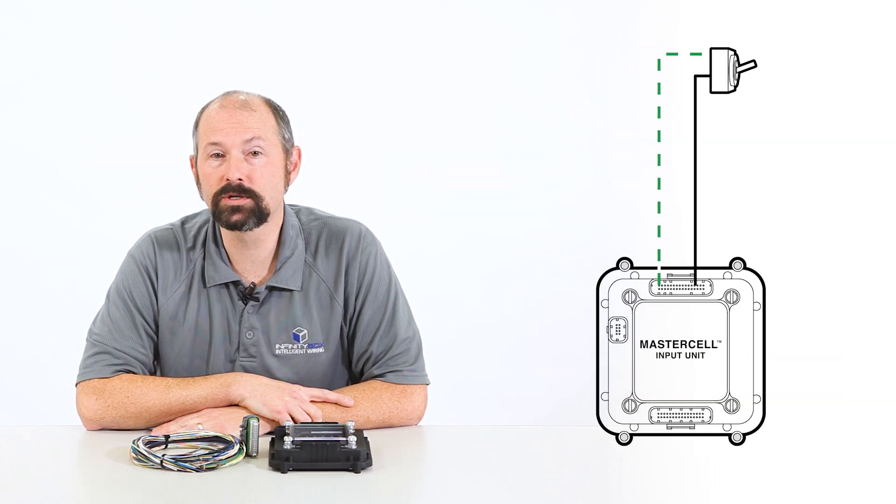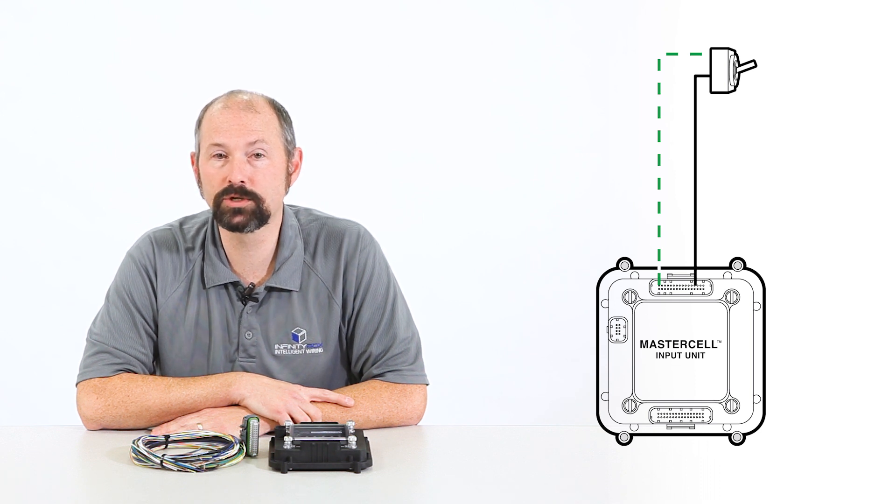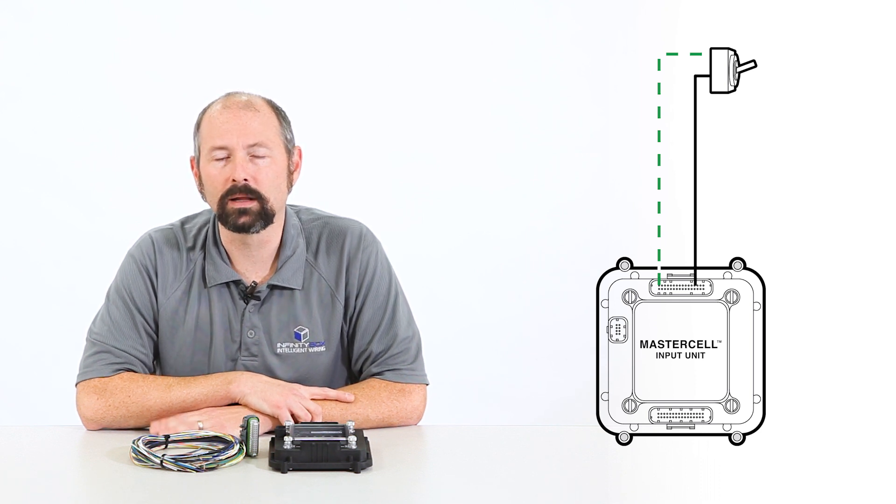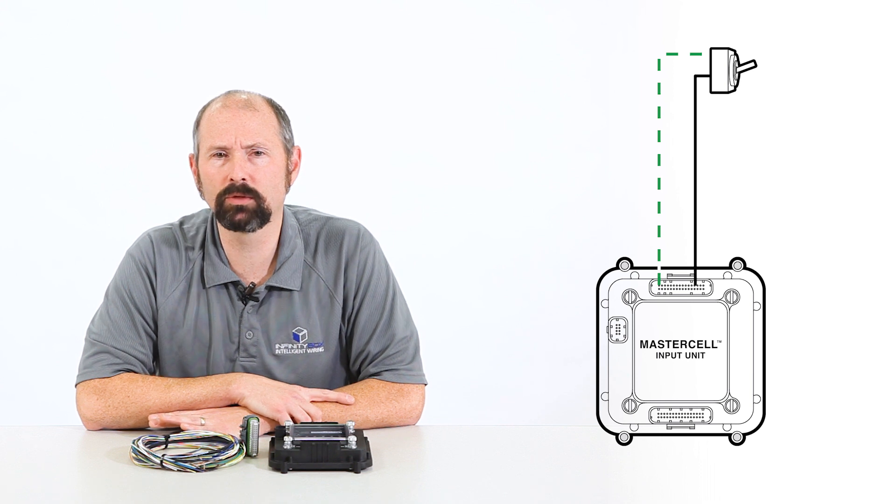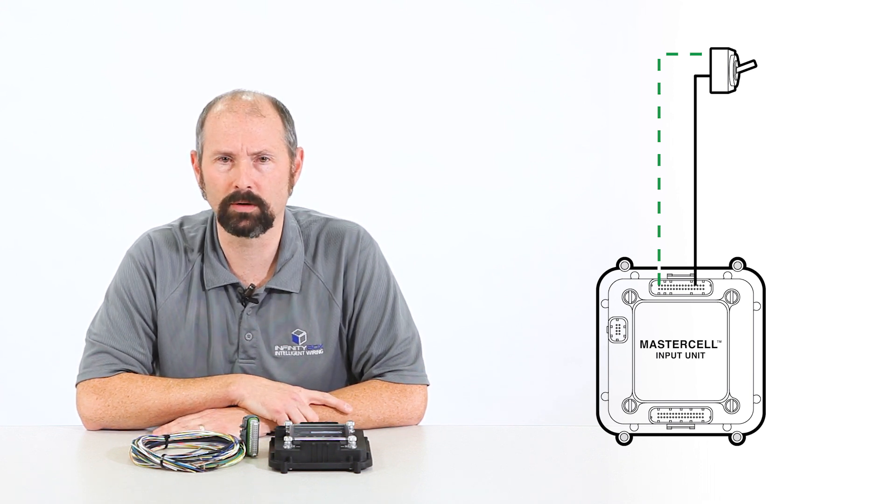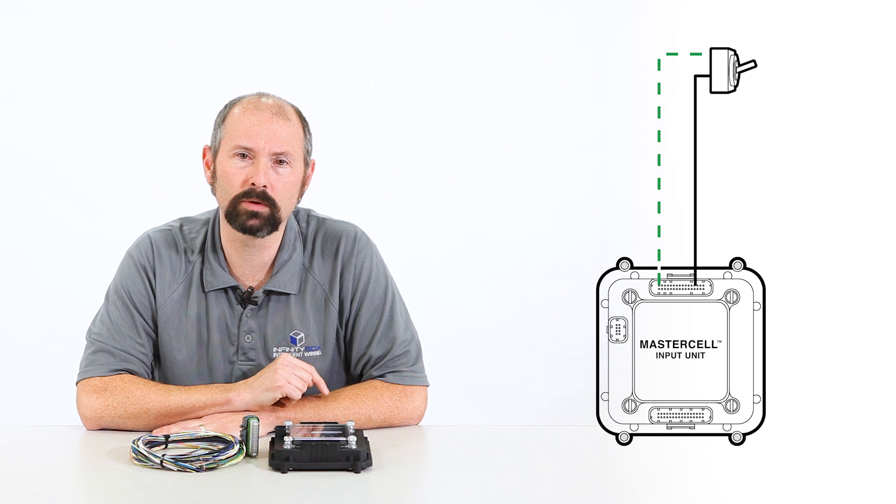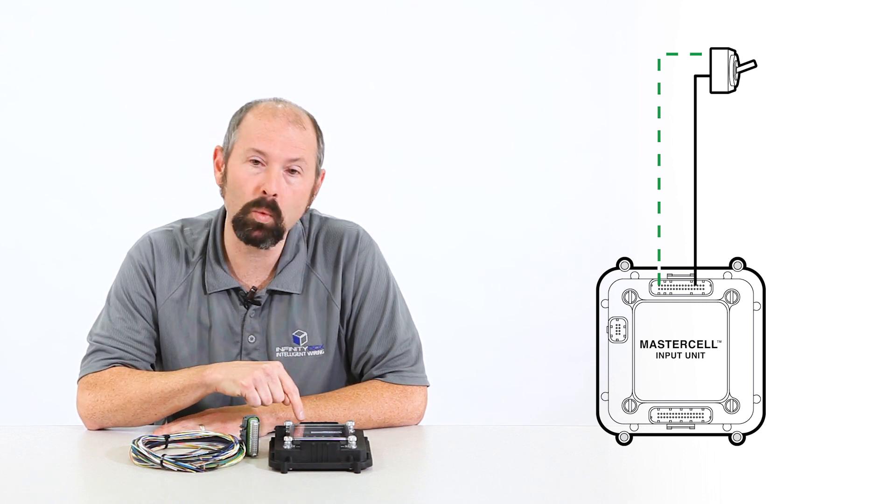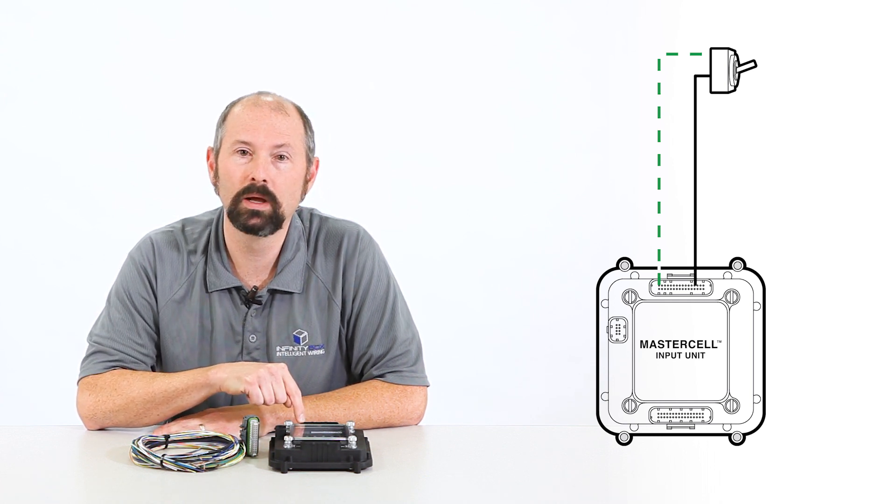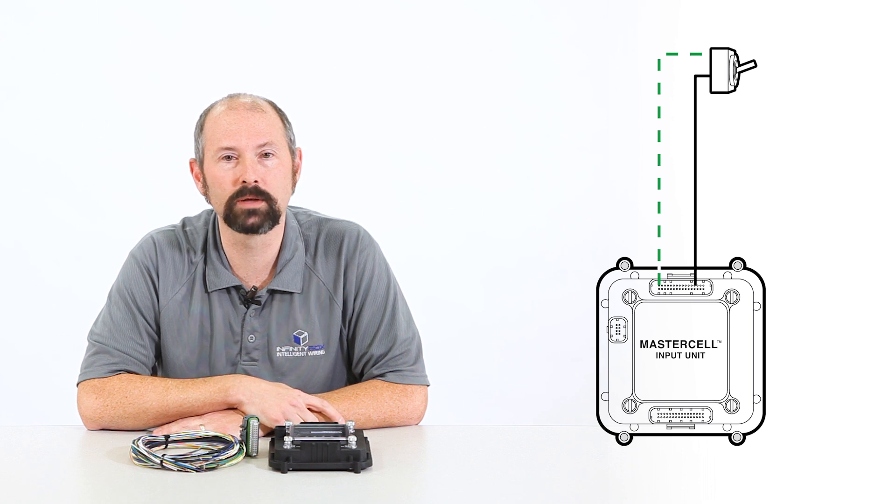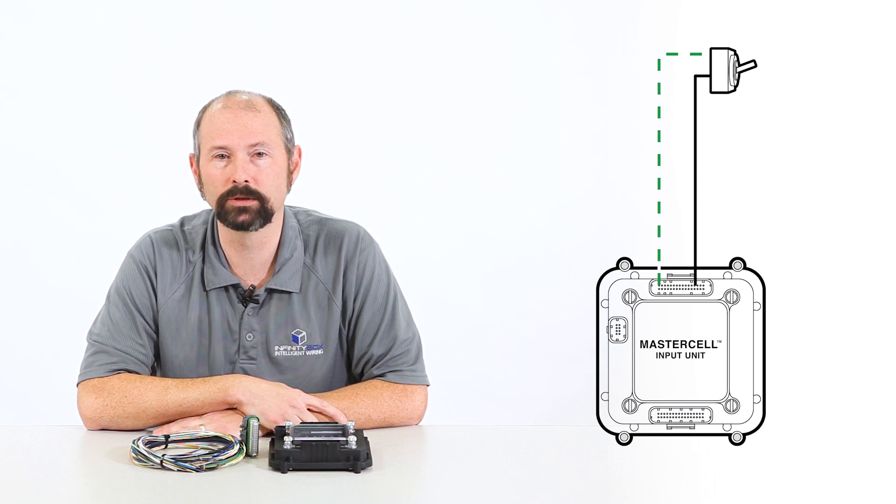Now the MasterCell works completely differently. The MasterCell works by getting switched to ground. And a lot of guys struggle with this, but once you get through this first concept, it makes everything so much easier. So instead of bringing power to the switch, I take a wire from the MasterCell, connect that to one of the terminals on the switch, and then I ground the other side of the switch.